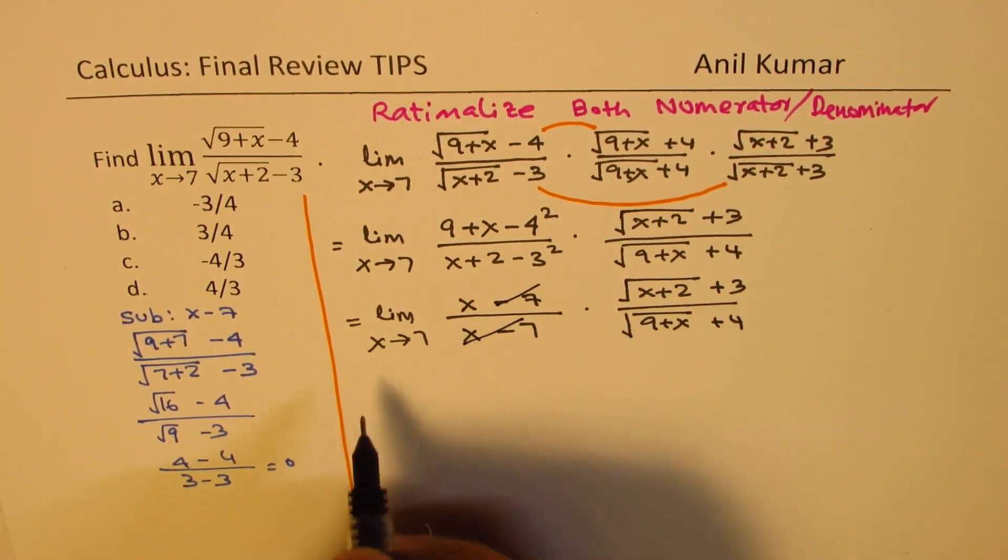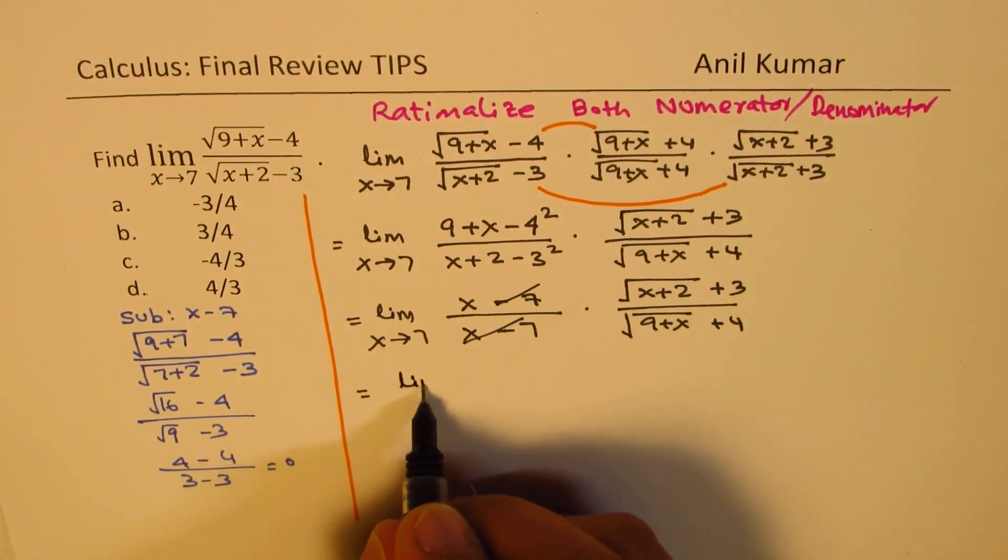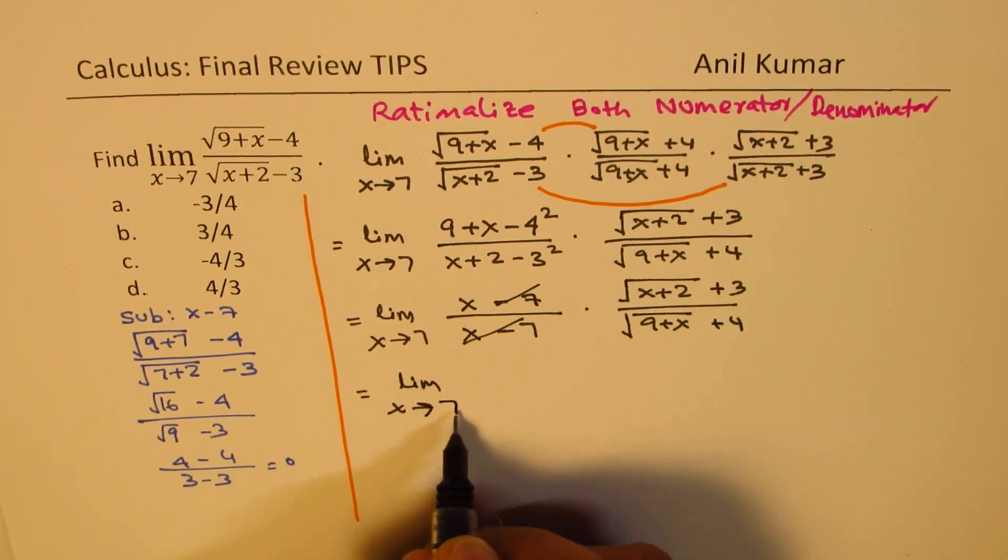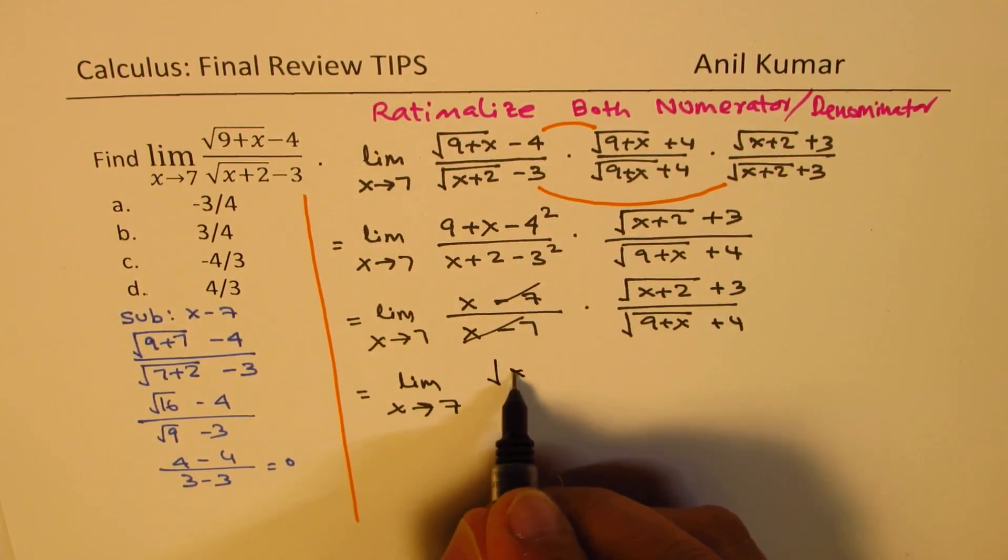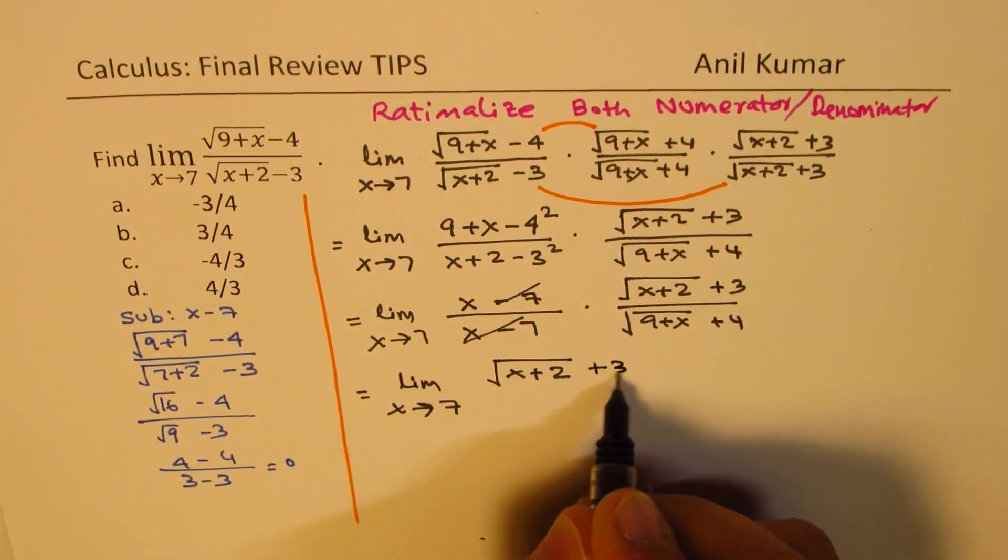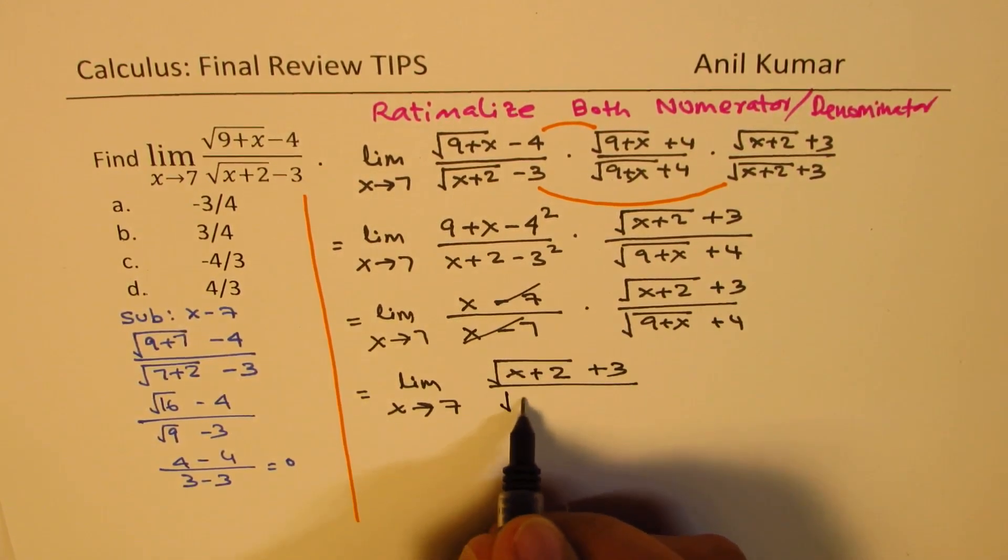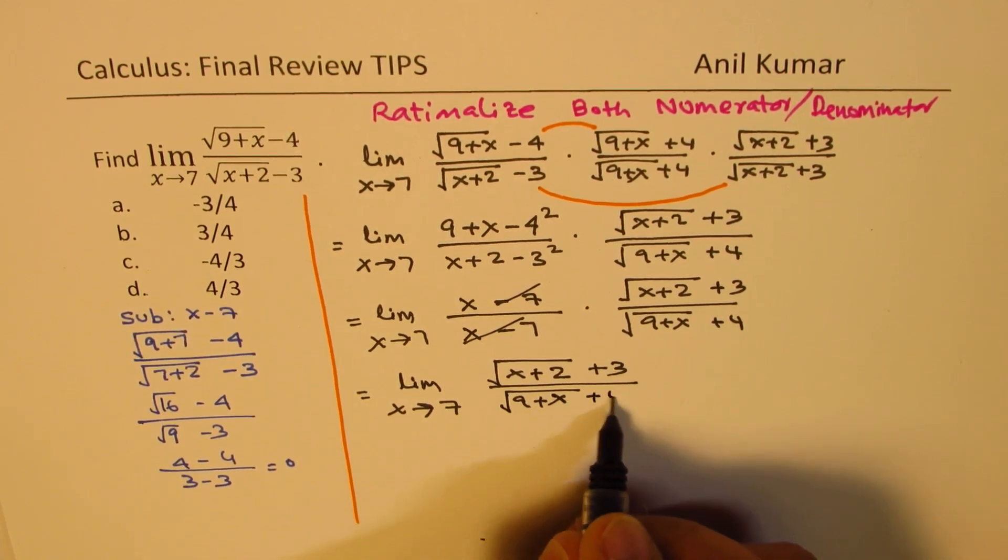So these terms cancel, we get limit x approaches 7 for square root of x plus 2, plus 3, over square root of 9 plus x plus 4.